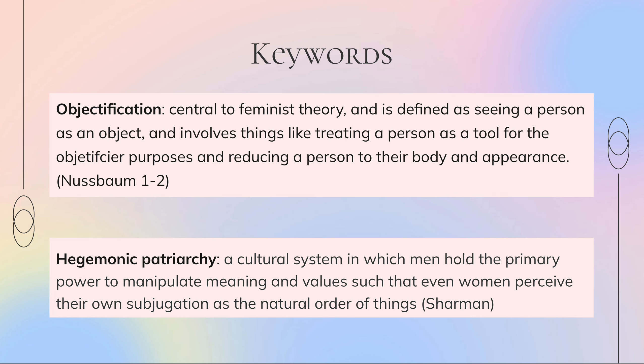Film is vastly controlled by mostly men who are mostly white, and they have the power to reinforce harmful stereotypes in their films, which therefore reinforces these stereotypes in society as well. It has gone to the point where they have created a culture so normalized that those who are negatively affected by it don't even realize it.